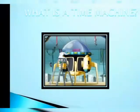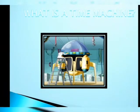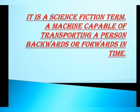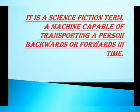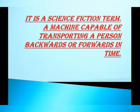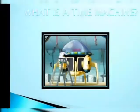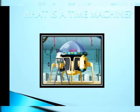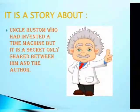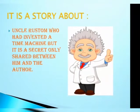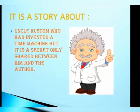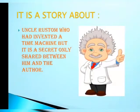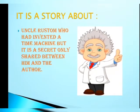First of all, what is a time machine? It is a science fiction term — a machine capable of transporting a person backwards or forwards in time. In short, we can also say that it is a time travel machine through which we can move from one time to another. This is a story about Uncle Rustam who had invented a time machine, but it is a secret shared only between him and the author.